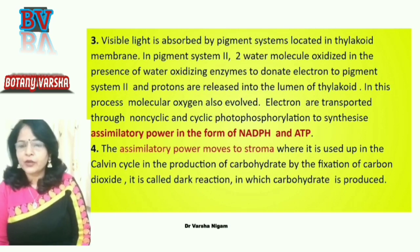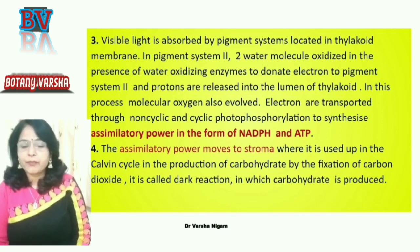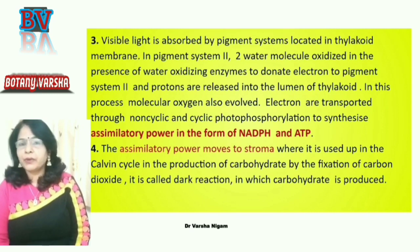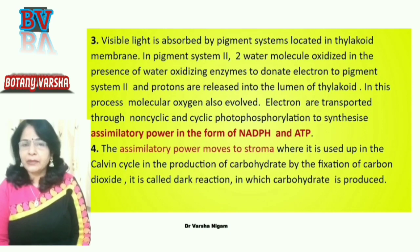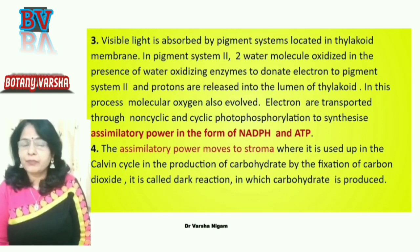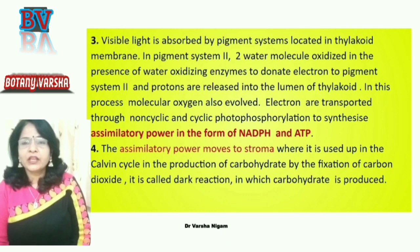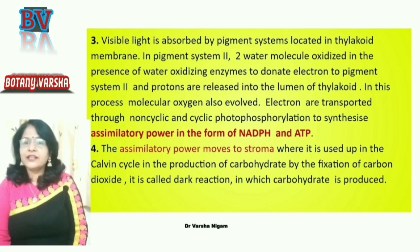Electrons are transported and assimilatory power is made. This assimilatory power in the form of NADPH and ATP is transferred to the stroma, where the dark reaction takes place. In the stroma, the RuBisCO enzyme performs the function of the Calvin cycle, also called the dark reaction, in which carbohydrate is produced.